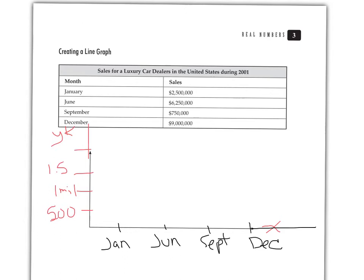A line graph doesn't use bars. It uses dots to represent. Of course, 6.5 million is going to be way up here to represent the data, where the data intersects the axes. And 9 million. And then the dots are connected with lines. So that's the basics of a line graph.